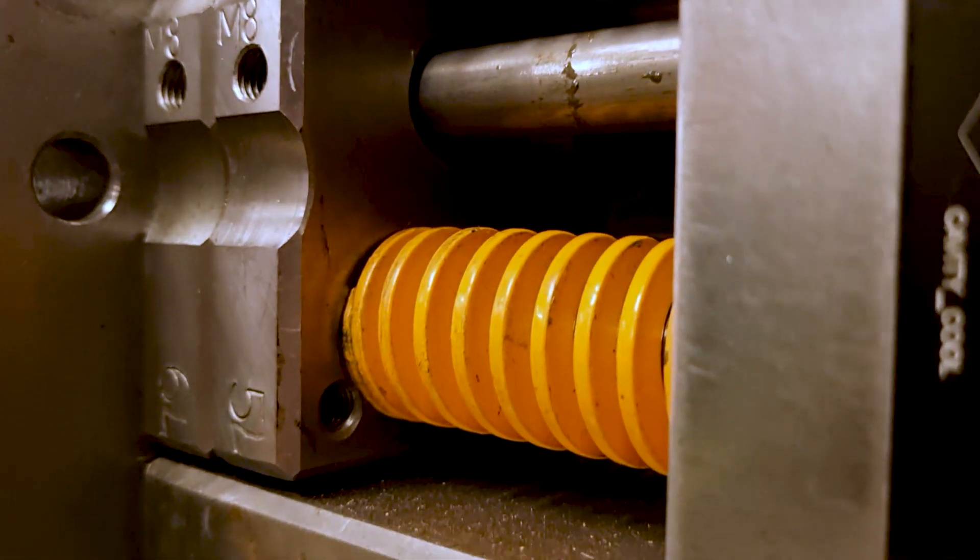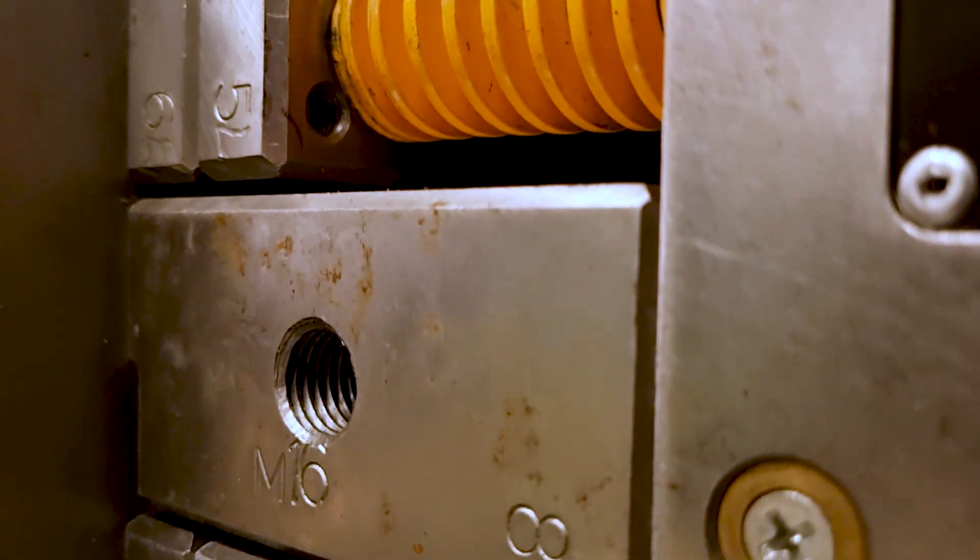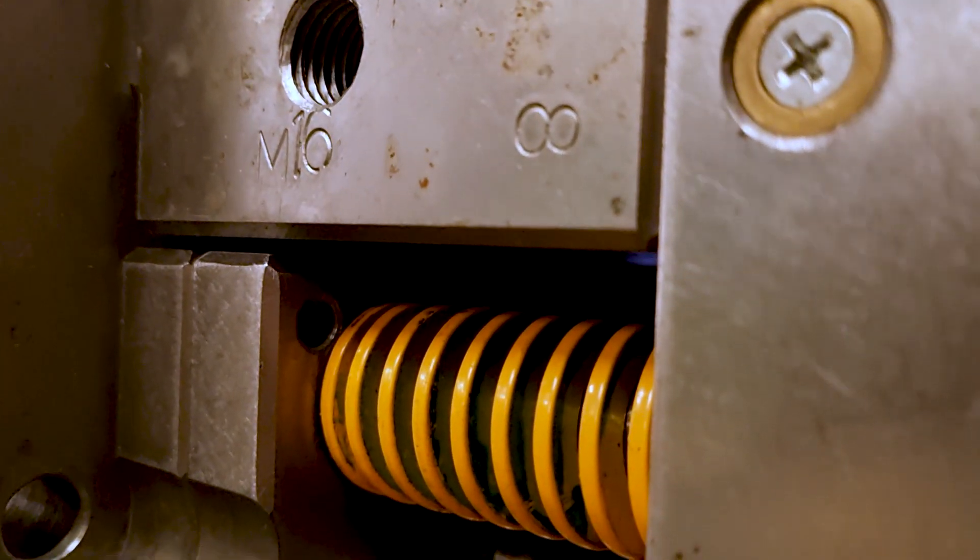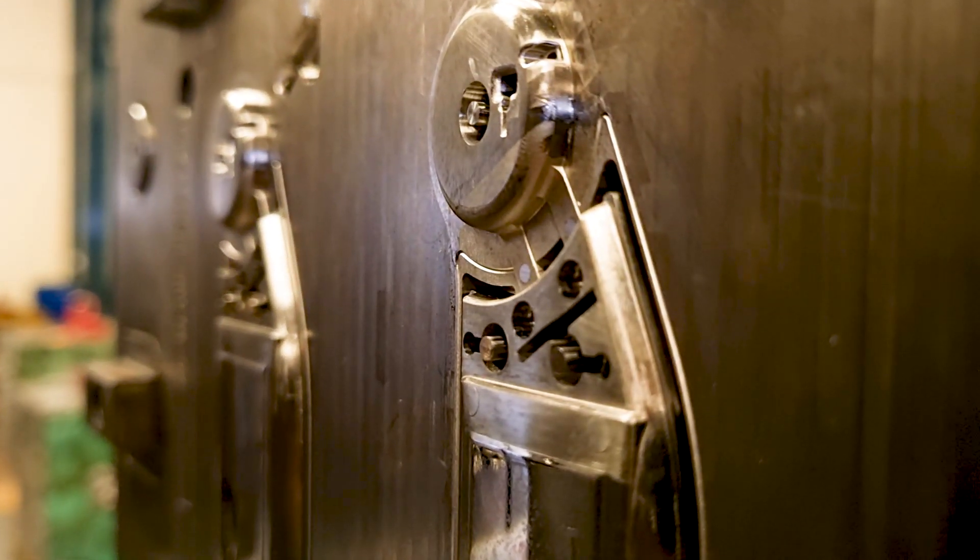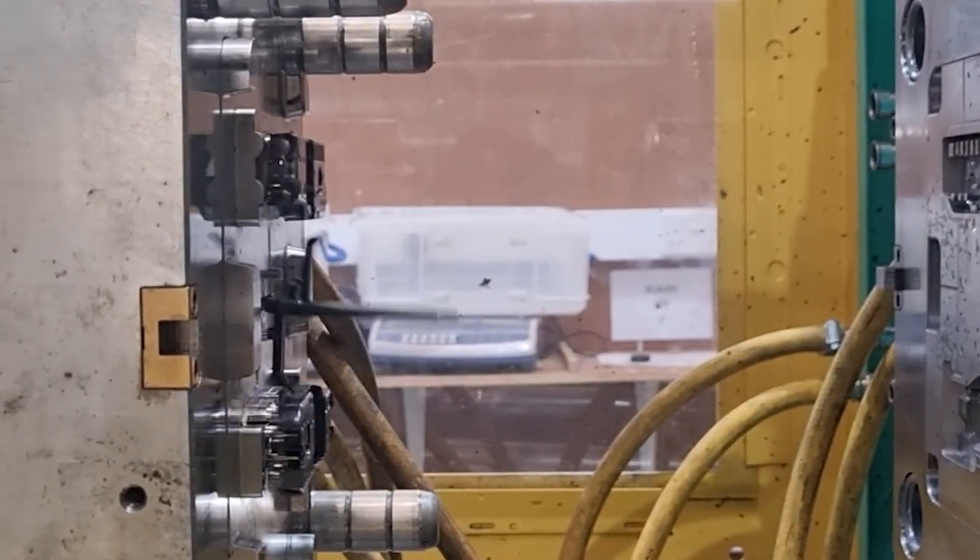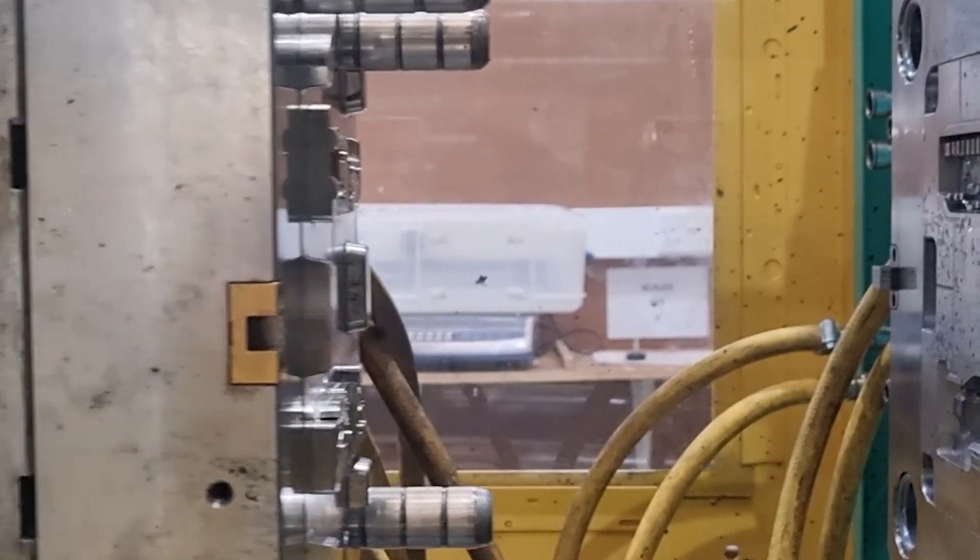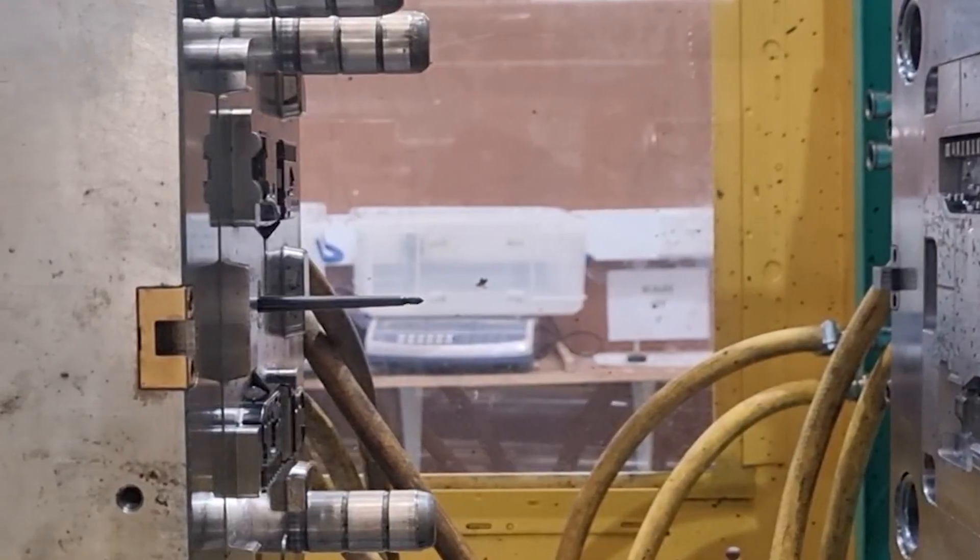The ejector plate allows the ejector pins to move forward and eject the part when the mold tool opens. The ejector pins allow for the part to be ejected from the tool when it opens. As the tool opens, the ejector plate pushes the pins forward, which are located in key sections so they do not damage the part.